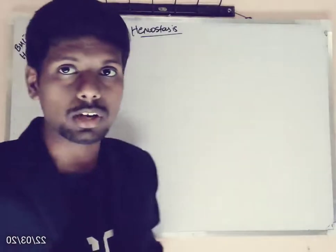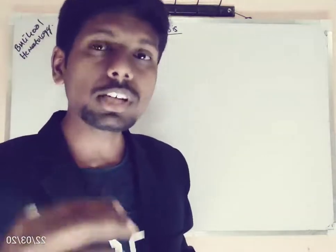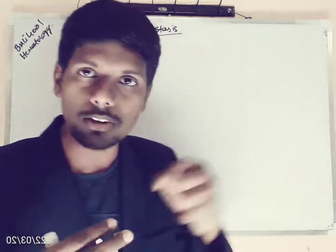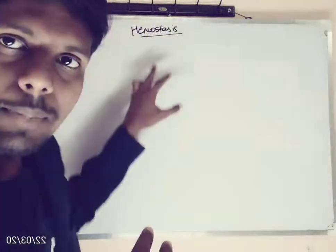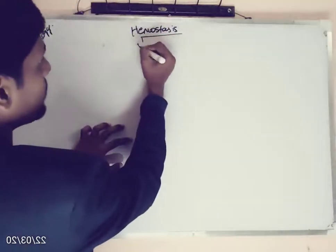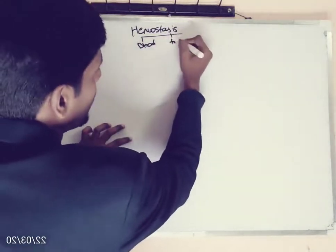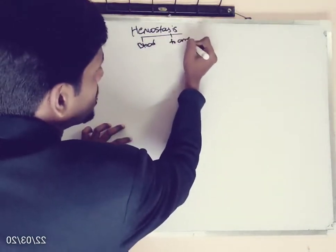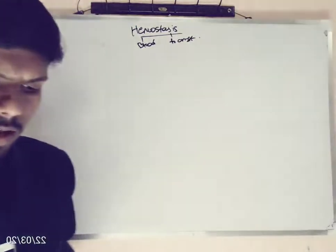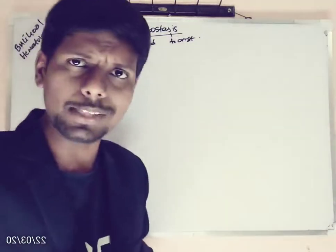Before understanding bleeding disorders, you need to know how the body prevents bleeding — that mechanism is called hemostasis. Hemo stands for blood, whereas stasis means to arrest. So arrest of blood is called hemostasis. How does this hemostasis happen in our body?